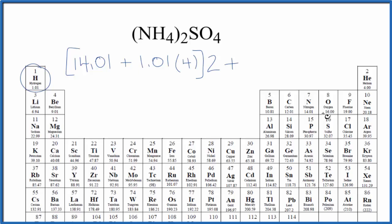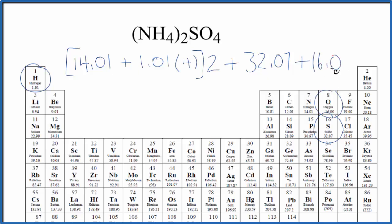For sulfur, sulfur is 32.07 grams per mole. And then oxygen right above it, 16.00 grams per mole. We have four oxygen atoms, so we're going to multiply that by four.